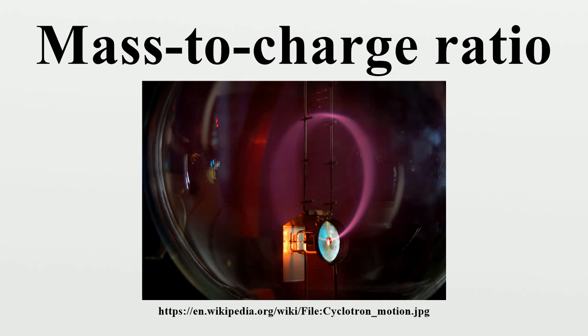The charge-to-mass ratio of an object is, as its name implies, the charge of an object divided by the mass of the same object. This quantity is generally useful only for objects that may be treated as particles. For extended objects, total charge, charge density, total mass, and mass density are often more useful.